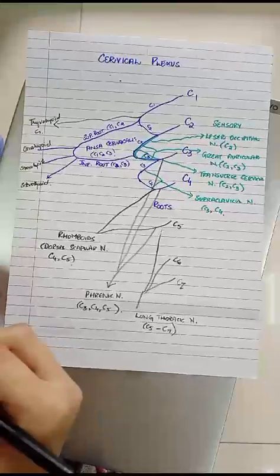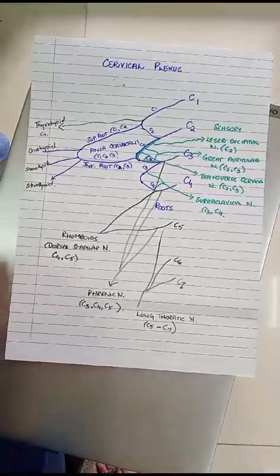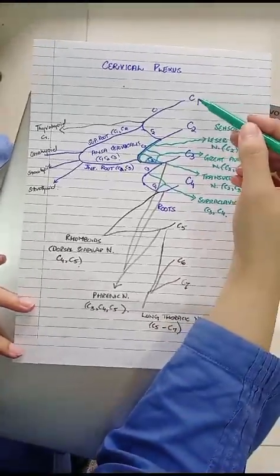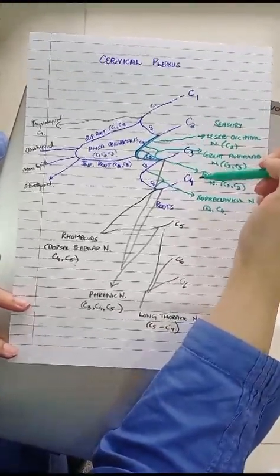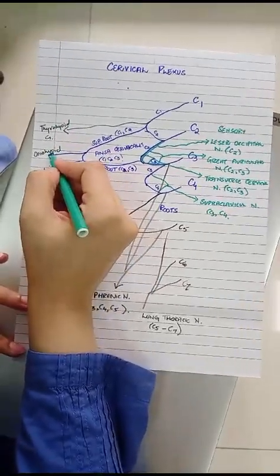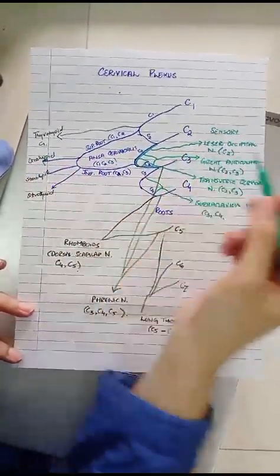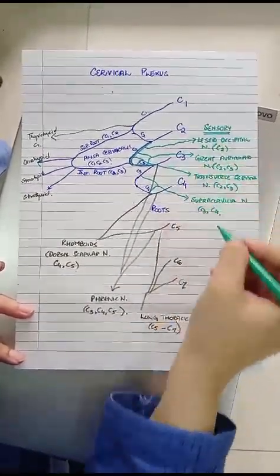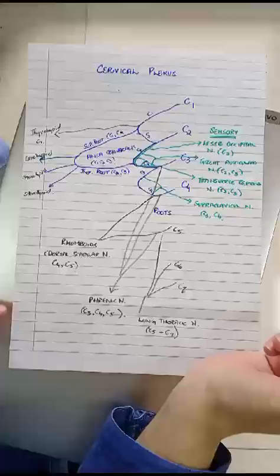So just to quickly summarize, this is the simple illustration of the cervical plexus with contribution from ventral rami of C1, C2, C3 and C4. The black branches highlight the motor distribution and the branches which I have mentioned in green color show the sensory distribution of the cervical plexus. Thank you.